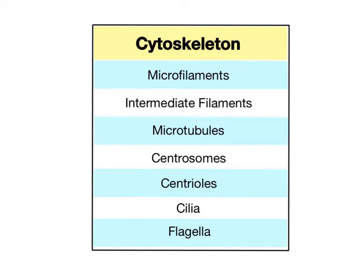The cytoskeleton consists of a variety of protein structures located inside the cell cytoplasm that provide support, protection, and locomotion for the cell. The components of the cytoskeleton include microfilaments, intermediate filaments, microtubules, and extensions of the cytoskeleton such as centrosomes, centrioles, cilia, and flagella.